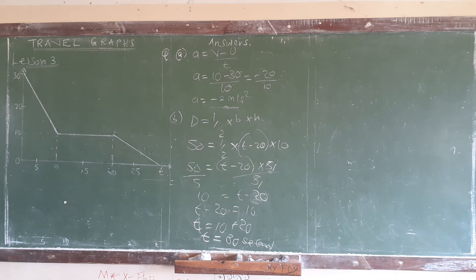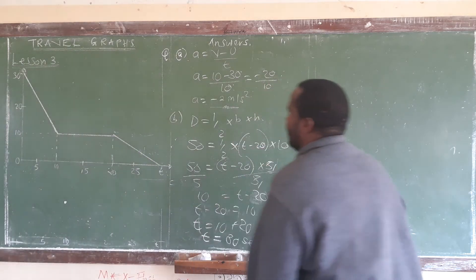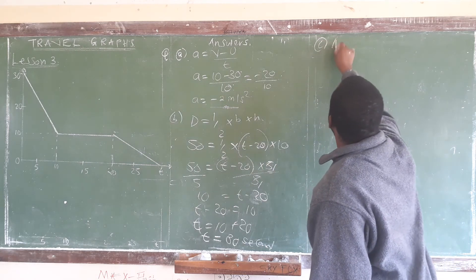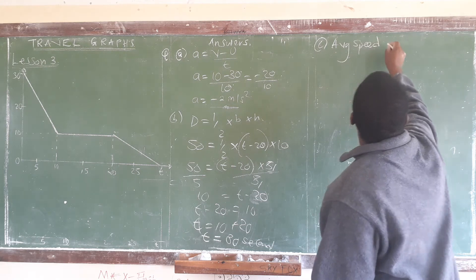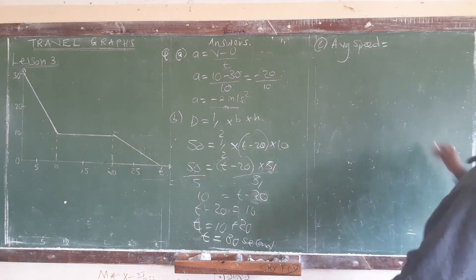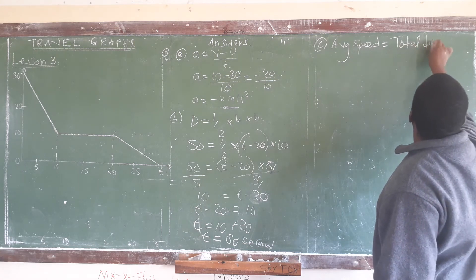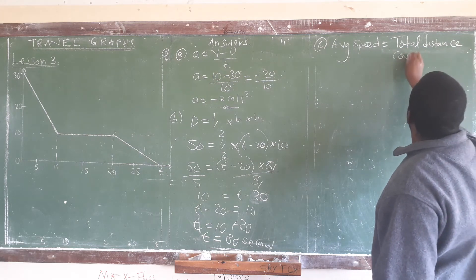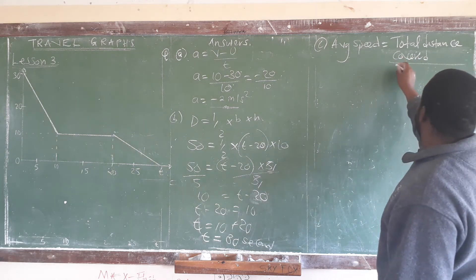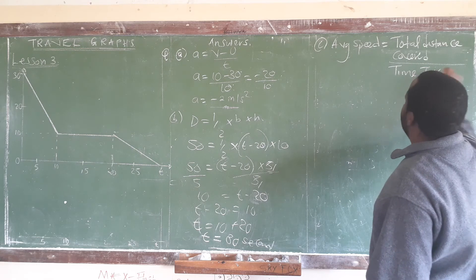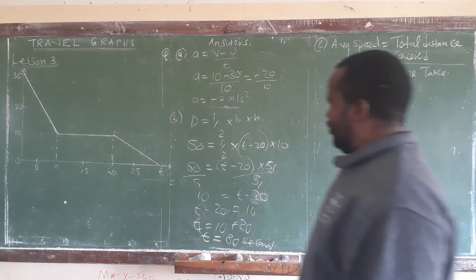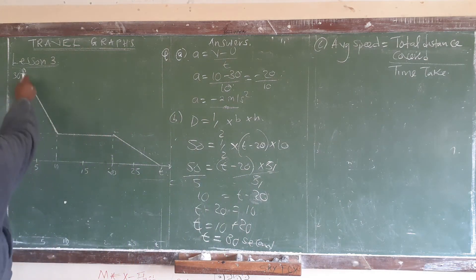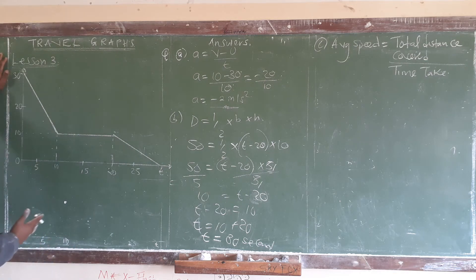For part C, the average speed — this is similar to the concept we dealt with in the lesson. Average speed is equal to total distance covered divided by total time taken to cover that distance. What we can do here is to decompose the graph into shapes that will easily give us the distance we are looking for.